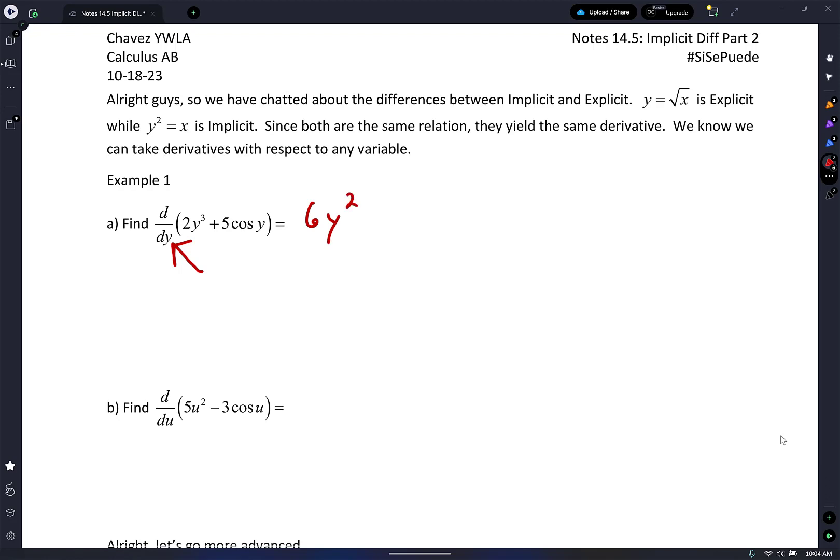If you want to be specific, it's 6y² dy/dy, but do we write that? No. But dy/dy is just 1. And what's the derivative of 5 cosine y? Negative 5 sine y. That's it. There's an equal sign and we've got correct notation and everything's correct.